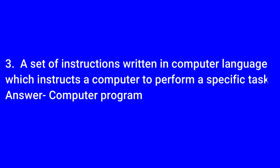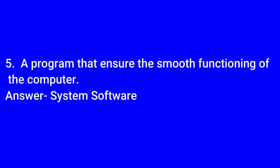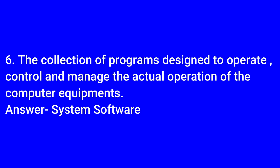Three: a set of instructions written in computer language that instructs a computer to perform a specific task — answer: computer program. Four: a program that allows a hardware peripheral such as a printer to communicate with a computer — answer: device driver. Five and six: a program that ensures the smooth functioning of a computer, and the collection of programs designed to operate, control, and manage the actual operation of computer equipment — answer: system software.